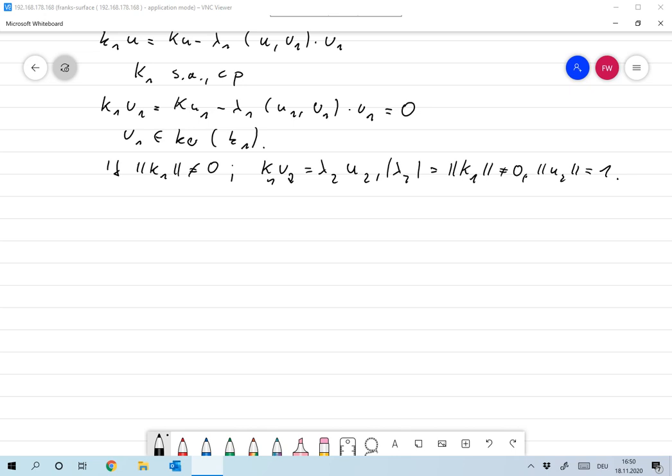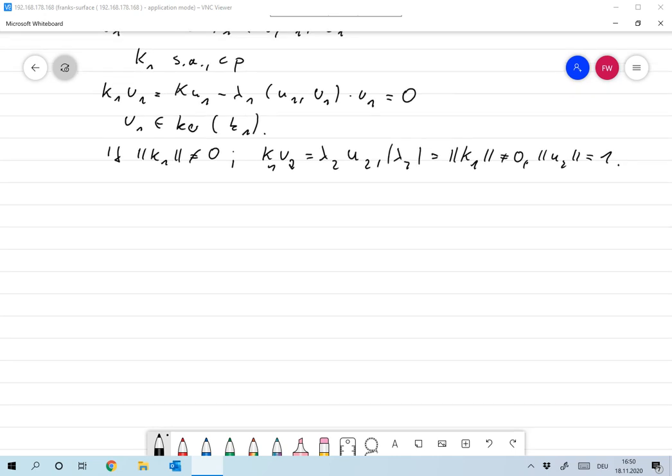Now u₁ and u₂ are eigenvectors of k₁ for different eigenvalues, u₁ for 0, the other one for λ₂ not equal to 0. So definitely we first have that u₁ and u₂ are orthogonal to each other.